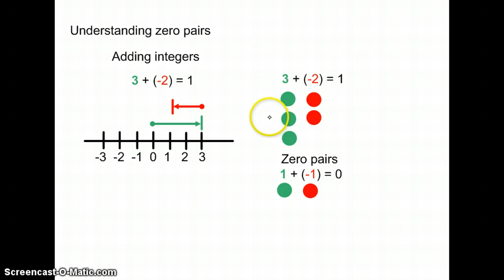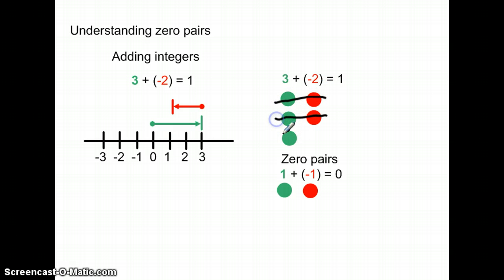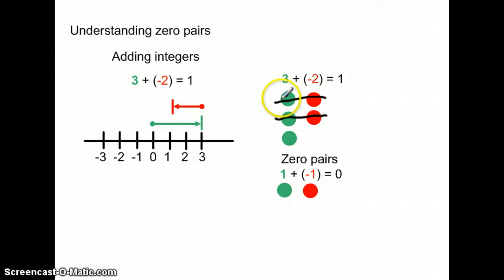Let's take a look at integer tiles. Here we have three positive integer tiles and two negative integer tiles. If we take this idea of zero pairs, a positive and a negative cancel each other out, so in effect we're left with zero. This pair cancels out, this pair cancels out, and we're left with one positive integer. That is why 3 plus a negative 2 is a positive 1 — we see it on the number line and we can understand it with integer tiles and zero pairs.